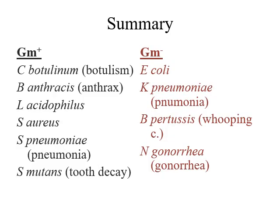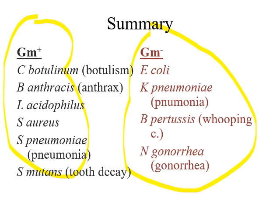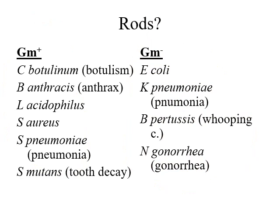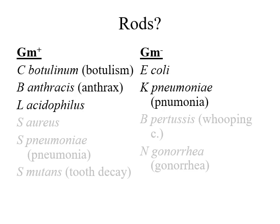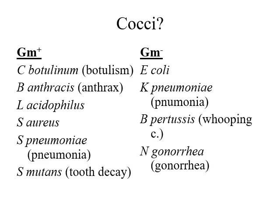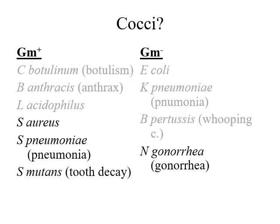To summarize gram staining: Clostridium botulinum, Bacillus anthracis, Lactobacillus acidophilus, Staphylococcus aureus, Streptococcus pneumoniae, and Streptococcus mutans are all gram positive. Escherichia coli, Klebsiella pneumoniae, Bordetella pertussis, and Neisseria gonorrhoeae are all gram negative. Among the gram positive group, the bacilli are Clostridium botulinum, Bacillus anthracis, and Lactobacillus acidophilus; Escherichia coli and Klebsiella pneumoniae are gram negative bacilli. Staphylococcus aureus, Streptococcus pneumoniae, Streptococcus mutans, and Neisseria gonorrhoeae are cocci.